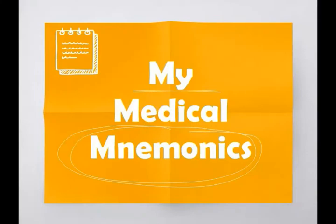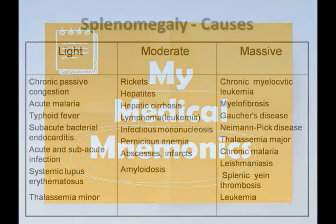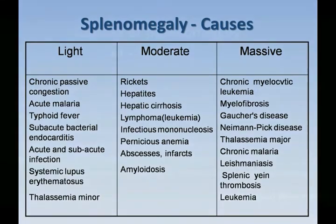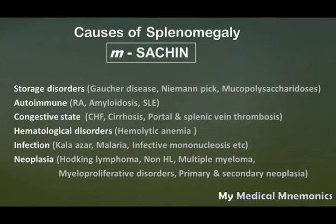Hello guys, welcome to the channel My Medical Mnemonics. Now we are going to see a simple mnemonic to remember causes of splenomegaly. Causes of splenomegaly is a very frequent question in board exams, so it is very important to know almost all the causes. The mnemonic is SACHIN — S-A-C-H-I-N. Sachin is a very famous name in India, so it is very easy to remember.